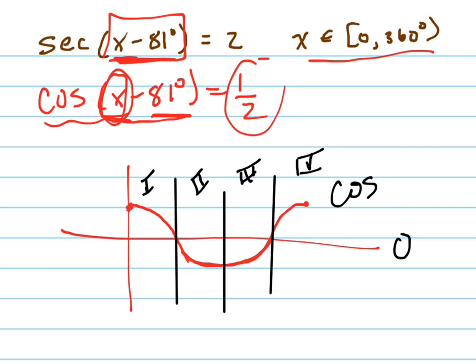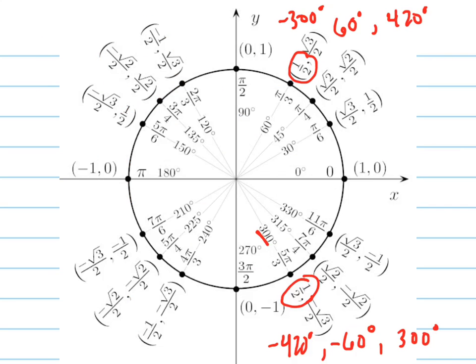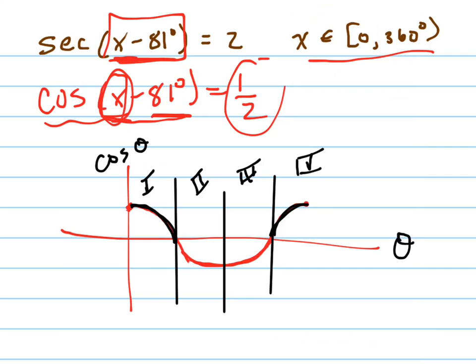So this is your theta down here, and this is the cosine of theta up here. When is the cosine of theta positive? It's positive in the first quadrant and in the fourth quadrant. Look at your unit circle. The cosine is positive in the first and the fourth quadrant because the cosine is the x. It's the adjacent over hypotenuse, so it's the x. And it's negative in the second quadrant and in the third quadrant.